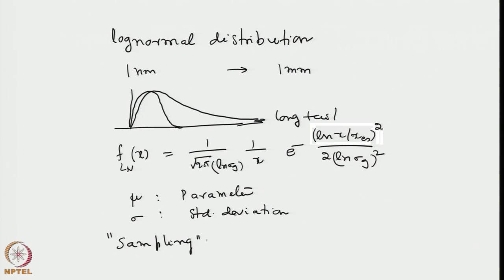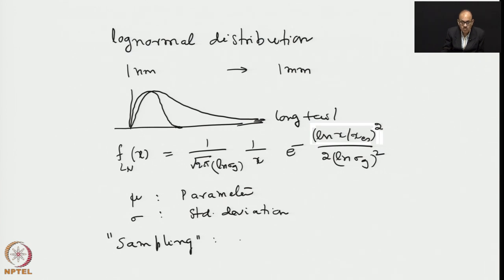A challenge of statistics is how to estimate this mean value, and this is accomplished by a method of sampling. There are many problems in sampling. It should be unbiased — meaning there should be no sampling bias. One should not preferentially select a few values from the data. A priori, there must be equal probability of occurrence of values governed by the distribution in question. Second, sampling is always limited in number — one has a limitation of not being able to perform experiments over the entire population, but only take a limited number of samples, say n samples.